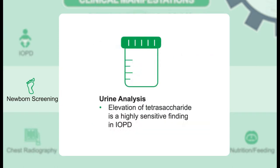Urine analysis of the hexotetrasaccharide, or Hex4, is a sensitive finding for infantile-onset Pompe disease and can be another marker of clinical suspicion. It should be mentioned that the tetrasaccharide can be normal in patients with late-onset Pompe disease.